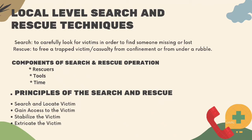Local-level search and rescue techniques. Search and rescue functions are broken into two aspects: search — to carefully look for victims in order to find someone missing or lost; and rescue — to free a trapped victim or casualty from confinement. The components of search and rescue operation have three elements: the rescuer, including trained personnel and volunteers; the tools, which depend on availability and needs — storm and earthquake damage may require lifting tools, while flood damage may require boats. The first 24 hours of a disaster are called the golden hours, where injured or trapped victims have an 80% chance of survival if rescued.